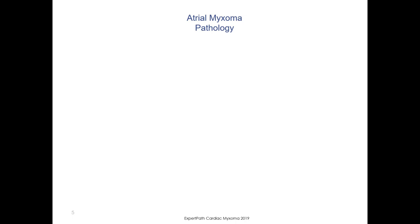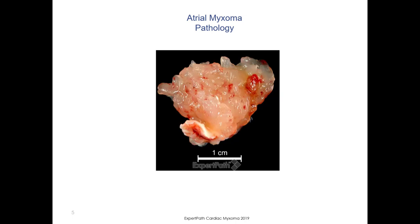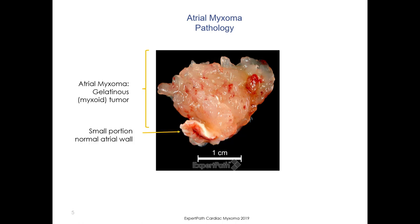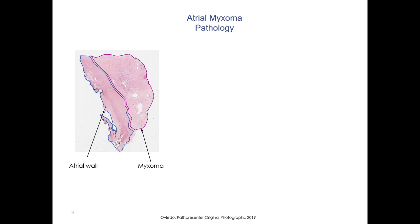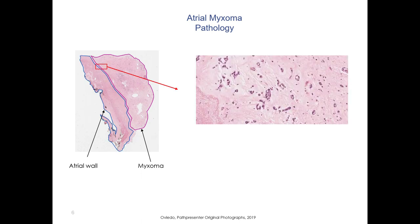Let's look at the pathology. Here is our tumor. You can see the large gelatinous tumor, which is known as atrial myxoma. Here is a small portion of normal atrial wall. Here is the histology — this is the myxoma, and here is the atrial wall. On high power, you can see there are both clusters and single cells, which are myxoma cells. This is the myxoid background; it has a faint blue appearance.